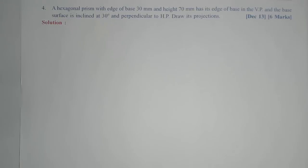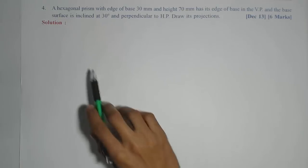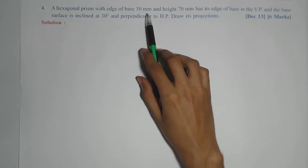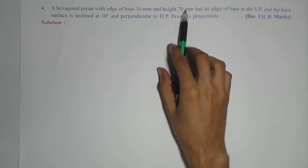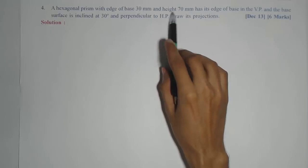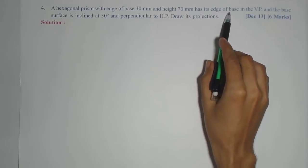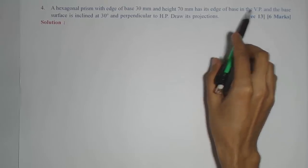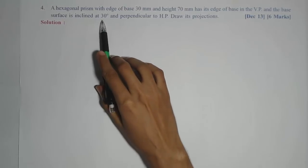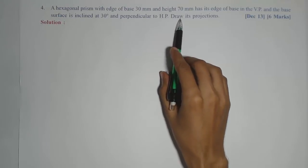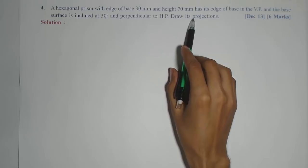Now we will see the last problem on prism. A hexagonal prism with edge of the base 30 mm and height 70 mm — it should be axis height — has its edge of the base in the VP and the base surface is inclined at 30 degrees and perpendicular to the HP. Draw its projection.